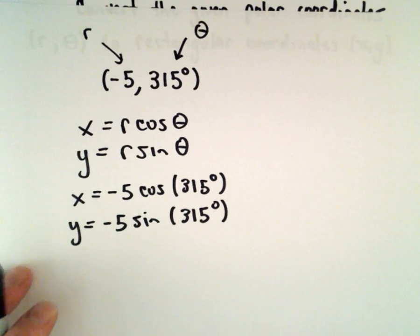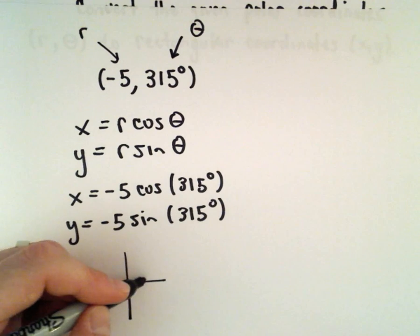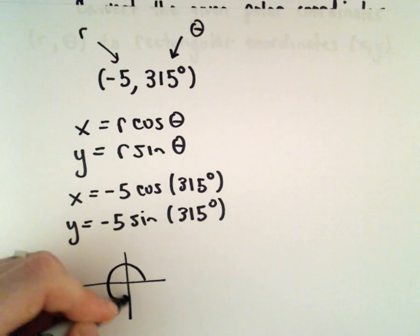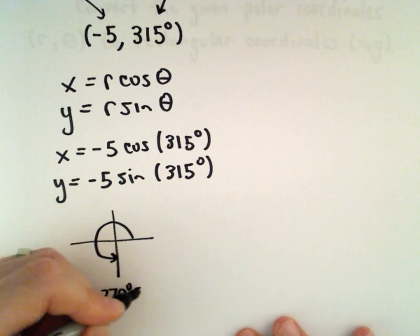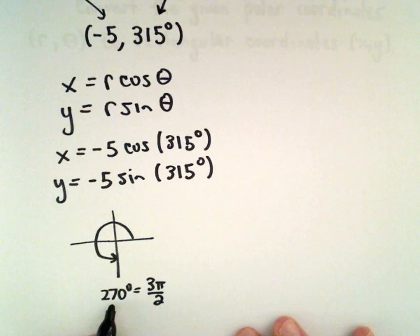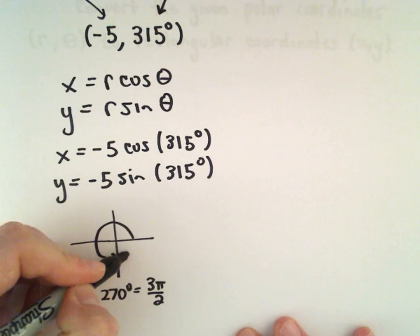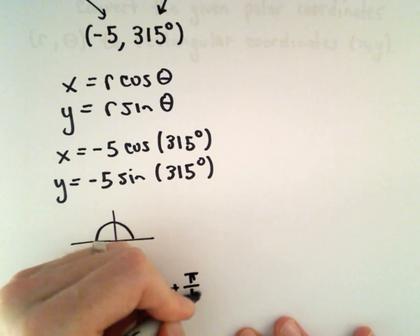Again, I always forget degrees. I'm so used to using radians. So I'm going to convert. Well, let's see. If we're at the negative y-axis, that's 270 degrees, which is 3 pi over 2. I guess we would need to add another 45 degrees, which would be adding another pi over 4 radians.